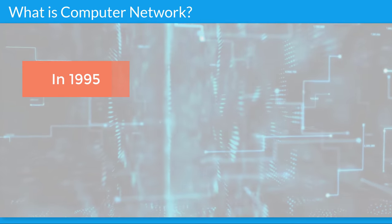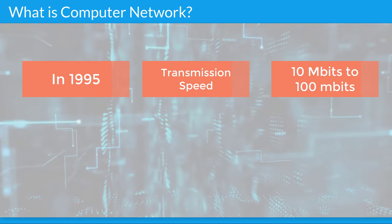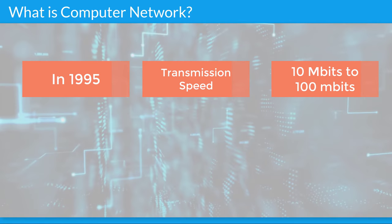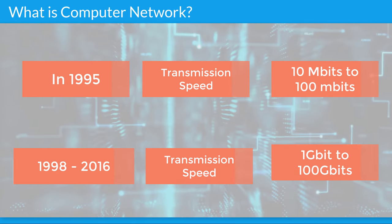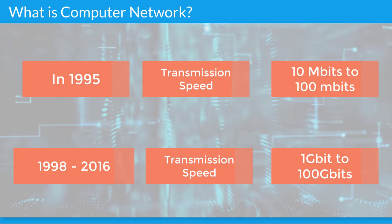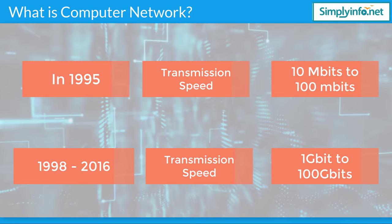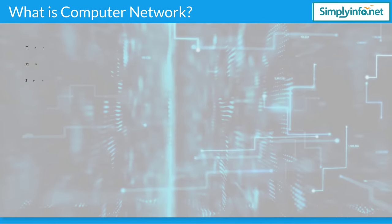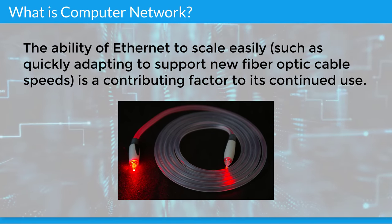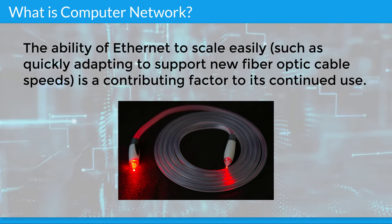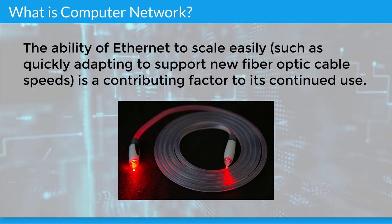In 1995, the transmission speed capacity for Ethernet increased from 10 megabits to 100 megabits. By 1998, Ethernet supported transmission speeds of a gigabit. Subsequently, higher speeds of up to 100 gigabits were added as of 2016. The ability of Ethernet to scale easily, such as quickly adapting to support new fiber-optic cable speeds, is a contributing factor to its continued use.